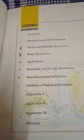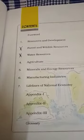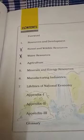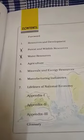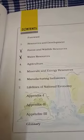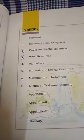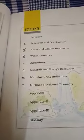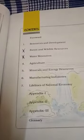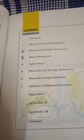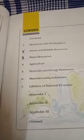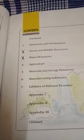So the chapters which will come for the board exam are: Chapter 1 - Resources and Development, Chapter 4 - Agriculture, Chapter 5 - Minerals and Energy Resources, Chapter 6 - Manufacturing Industries, and Chapter 7 - Lifelines of National Economy.